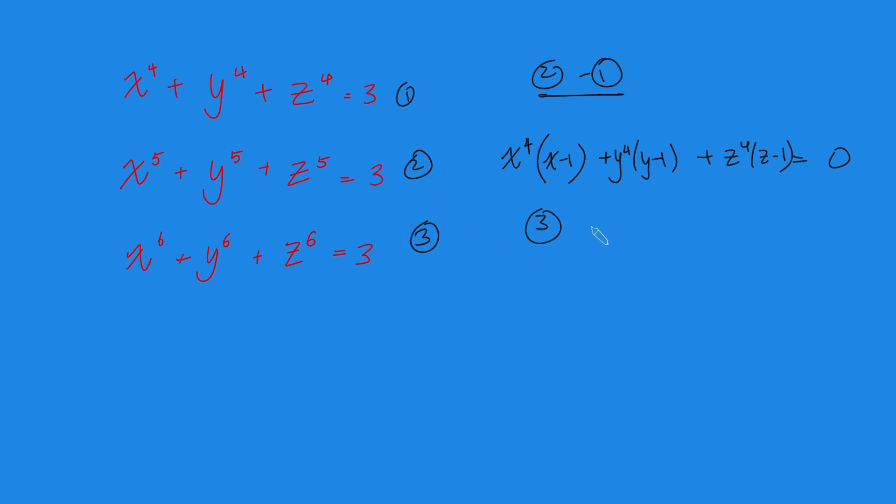Let's do something similar with equation 3 minus equation 2. Well, x^6 minus x^5, I can take out an x^5 from that, and get x - 1 there. Then y^6 minus y^5, take out y^5. And something similar with z here as well. And that equals 0.